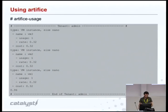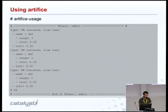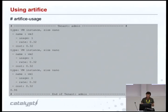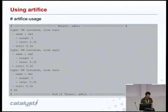To use Artifice, besides the REST interface, Artifice provides you with two simple command-line tools: artifice usage and artifice bill. Artifice usage, as the name implies, will display the usage information for a given period of time. The output will combine the information coming from Ceilometer and the pricing information coming from your ERP system.